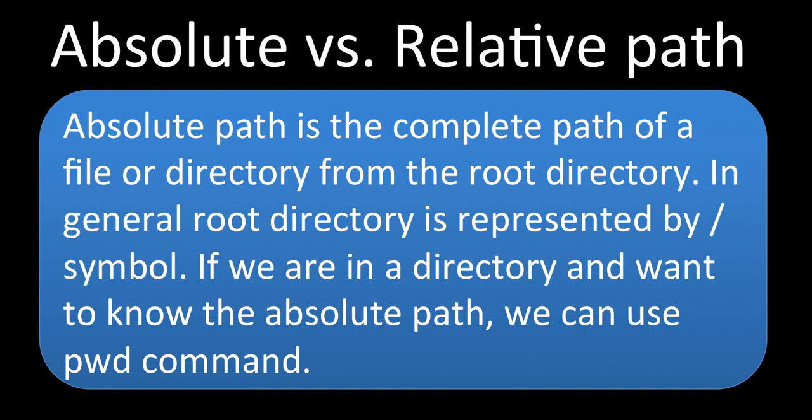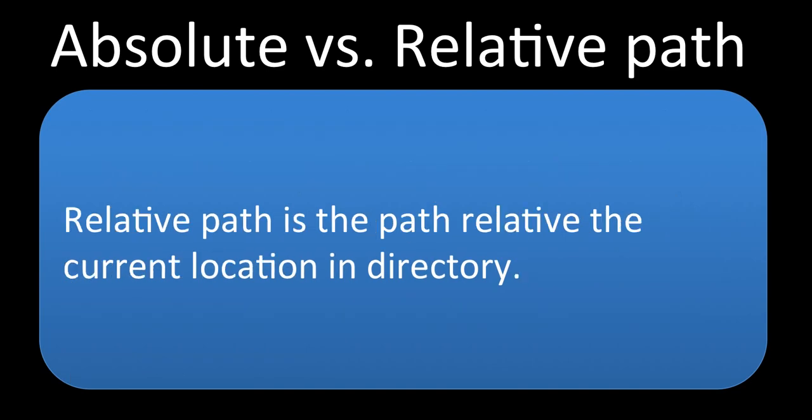The root directory is represented by the slash symbol `/`, and from there all the way to the end — whatever is the full path — that is called the absolute path. If we are in a directory and want to know the absolute path, we can use the `pwd` command (present working directory). The `pwd` command gives us the absolute path of a file or directory.